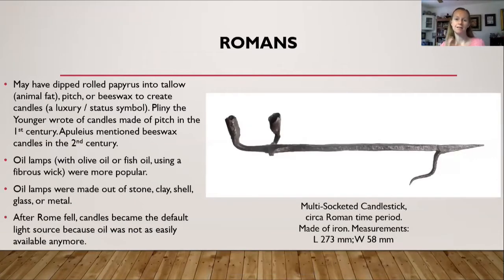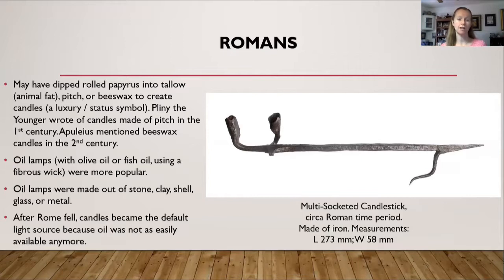First, let's go back into history, back during the Roman time period. We actually have many examples of what Romans used as a lighting source. They may have dipped rolled papyrus into tallow — tallow is animal fat — or rolled it in papyrus into pitch or beeswax to create candles. However, if you used beeswax, that was more of a luxury or a status symbol.